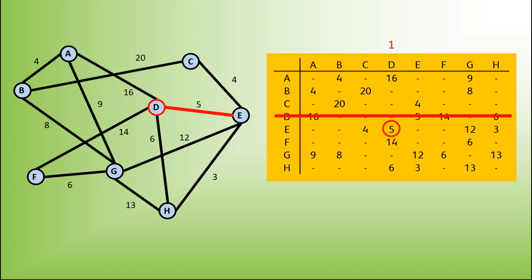We've now included the vertex E, so that row gets crossed out. We number the column that is headed by E, and we now look down both columns with a number above them. We're looking for that smallest number, and of course it is the 3. This means we involve the edge going from H to E.